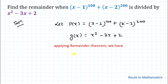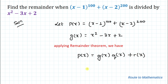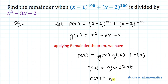By applying the Remainder Theorem we have: p(x) equals g(x) multiplied with q(x) plus r(x). This is our Remainder Theorem, where p(x) is the polynomial, g(x) is the divisor, q(x) is the quotient, and r(x) is the remainder.